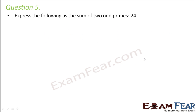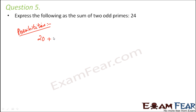Question number 5: Express the following as the sum of 2 odd primes. So let us say you are given the number 24. You have to write 24 as the sum of 2 numbers which are also prime numbers — basically 2 odd prime numbers. Now what are the various possibilities of writing 24 as a sum of 2 numbers?